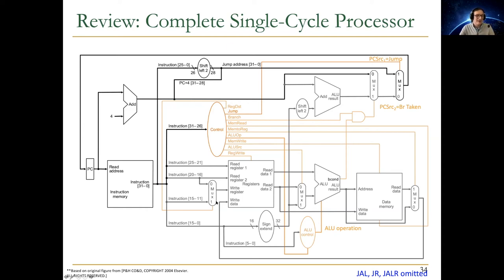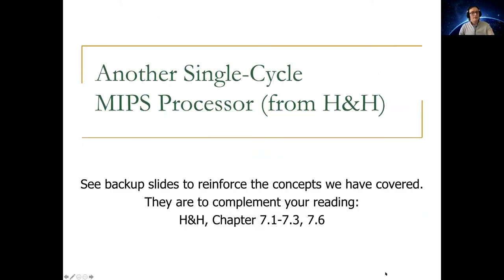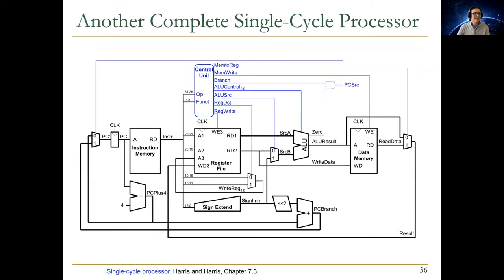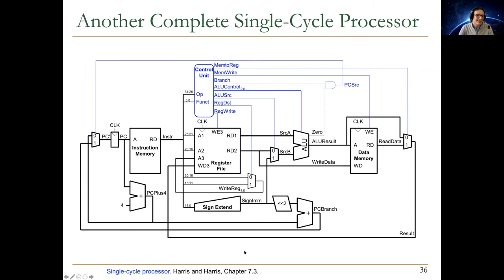This completes our review of the single-cycle processor. To complement, there's another single-cycle MIPS processor in your Harris and Harris book that reinforces these concepts. The end result looks essentially the same — very similar to the processor we designed. They omit some instructions but the structure is the same. You can see a PC-branch adder and a PCsource mux, though in their version they have only one PCsource since they don't implement jumps.